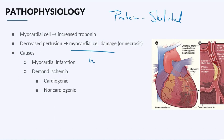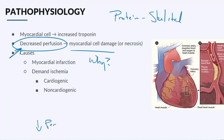Why does myocardial cell damage happen? It happens because of decreased perfusion to the heart tissue. So let's quickly recap so we're all on the same page. If you have decreased perfusion or decreased oxygenation to the heart tissue, the heart tissue dies or is damaged and troponin is released. Decreased perfusion equals decreased oxygenation, which means cardiac tissue releases troponin.